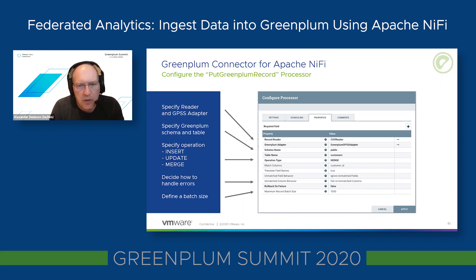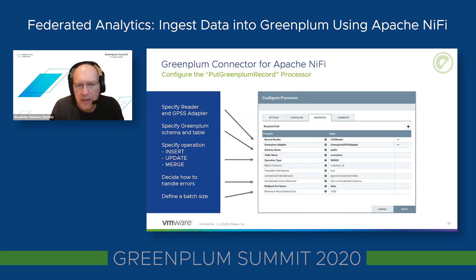We also need to decide how to handle errors in case the schema of the incoming NiFi record doesn't match the schema of the database — you can either ignore or fail on that event. Finally, we define the batch size: the number of records to transform and send to GPSS at once. The larger the batch size, the more memory used by the NiFi instance, but fewer network round trips are needed to send data to GPSS — so there's definitely a trade-off.